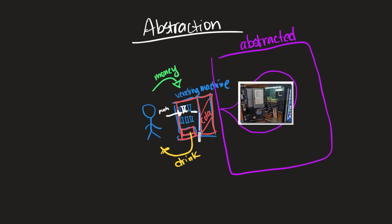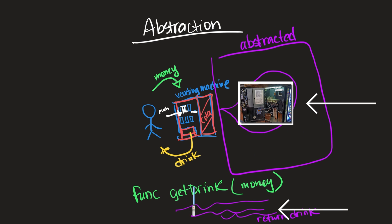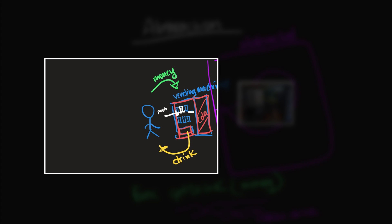Some of you might notice what I did there - I said we passed in the money as a parameter and it returns the drink. So you can think of this vending machine literally as a function. We'll say `func getDrink`, pass in some money, there's a bunch of underlying implementation code, and then the drink gets returned. The function definition is the stuff that's abstracted. As the caller of this function, all you need to know is: to get your drink, call `getDrink` with money passed in, and assign the result to `myDrink`. That's abstraction.